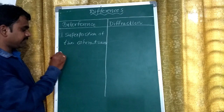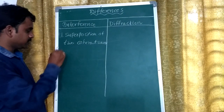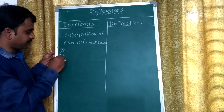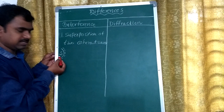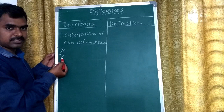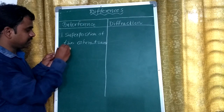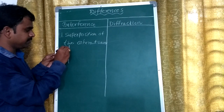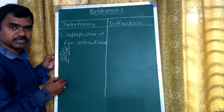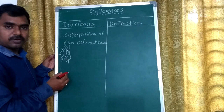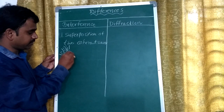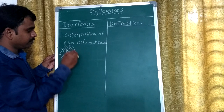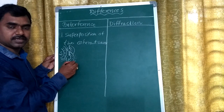We have taken a source S, which emits crests and troughs. One solid line is called a crest and a dotted line is considered a trough. In the propagation direction, if we take two slits S1 and S2, these two sources are also producing crests and troughs. These are participating in the interference.